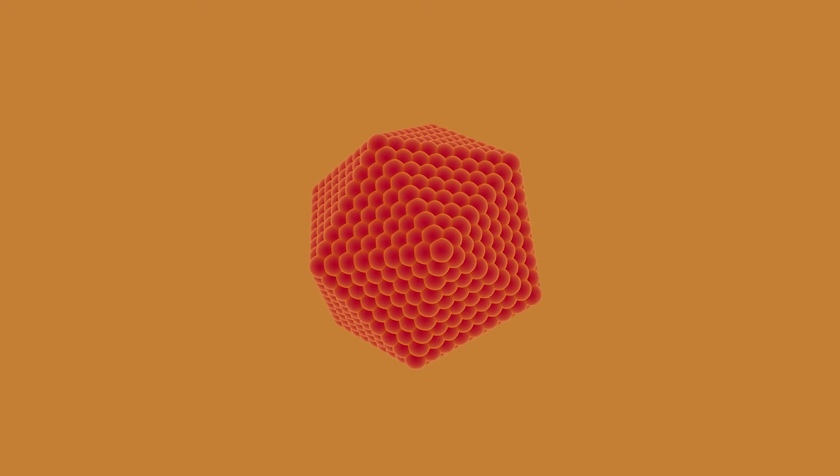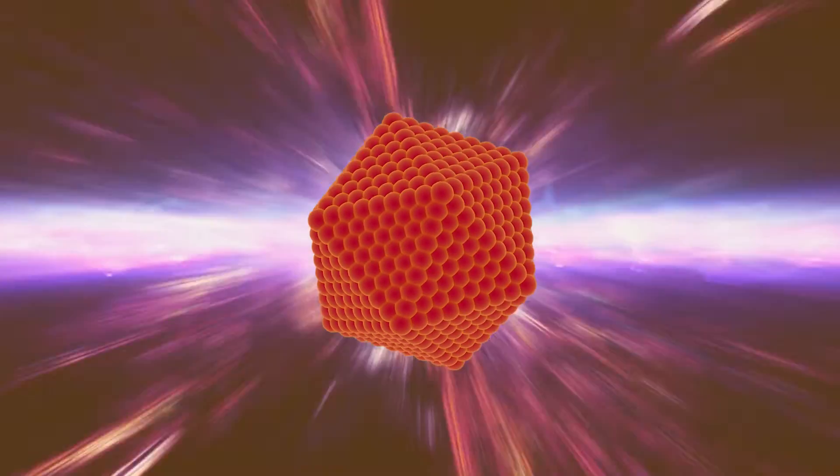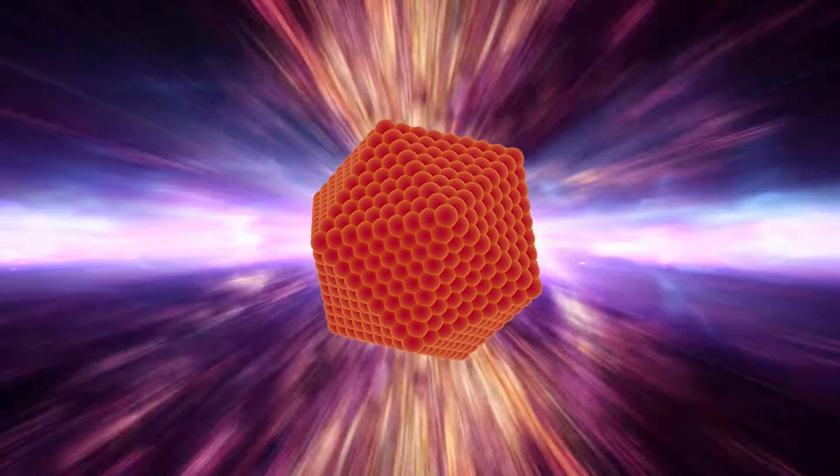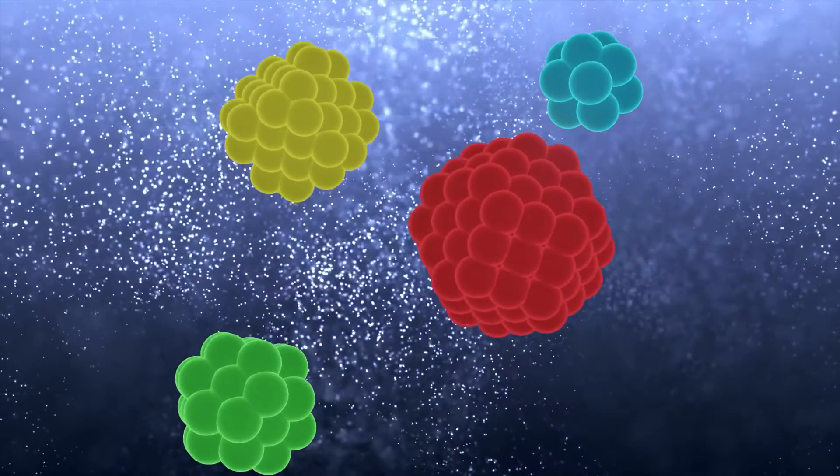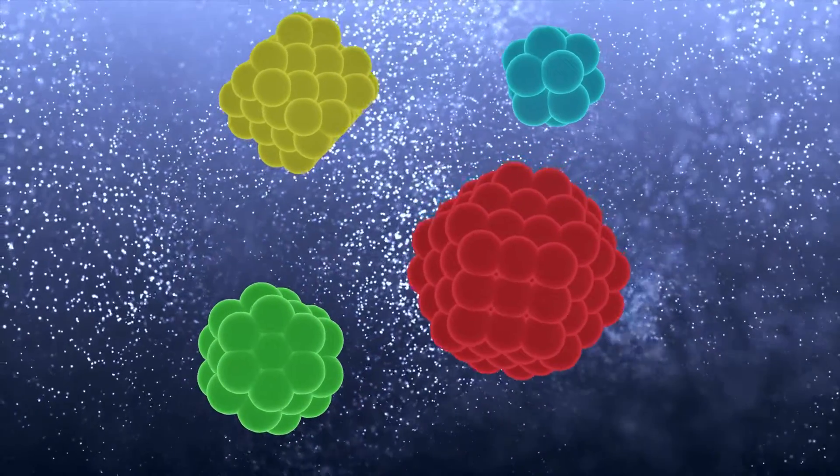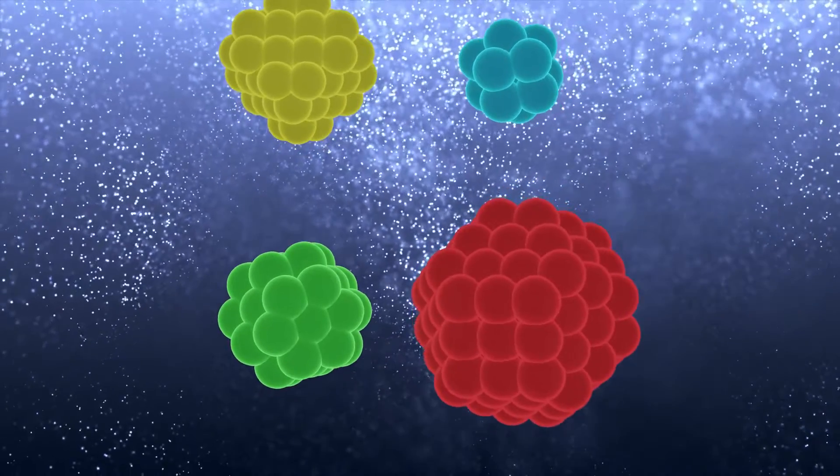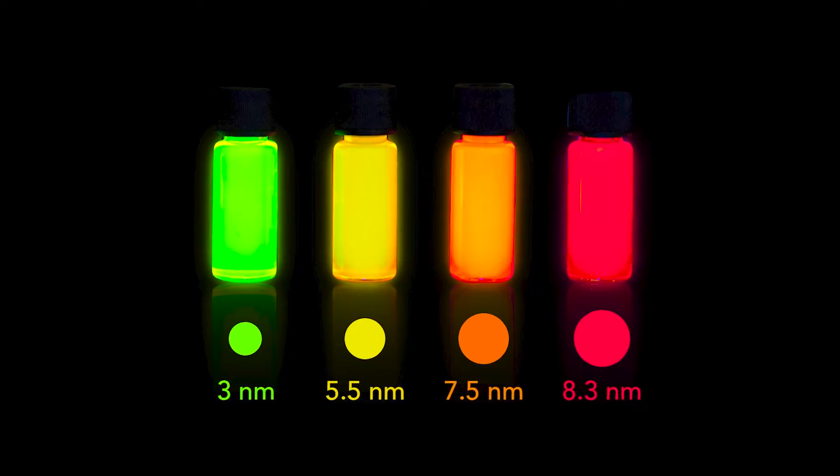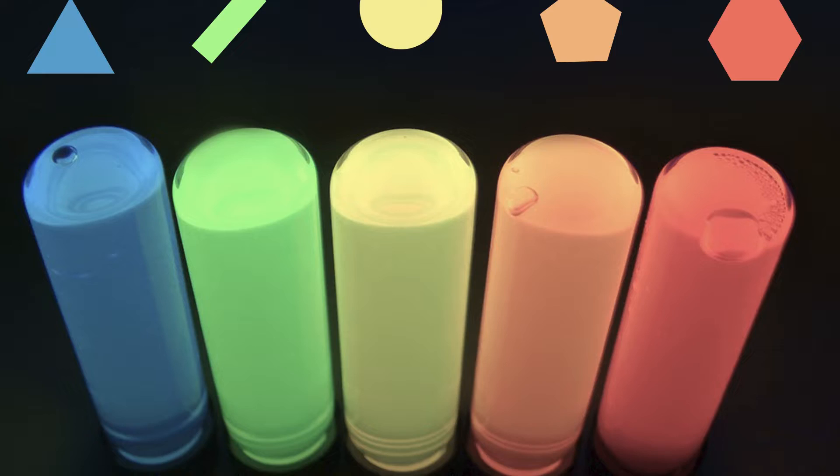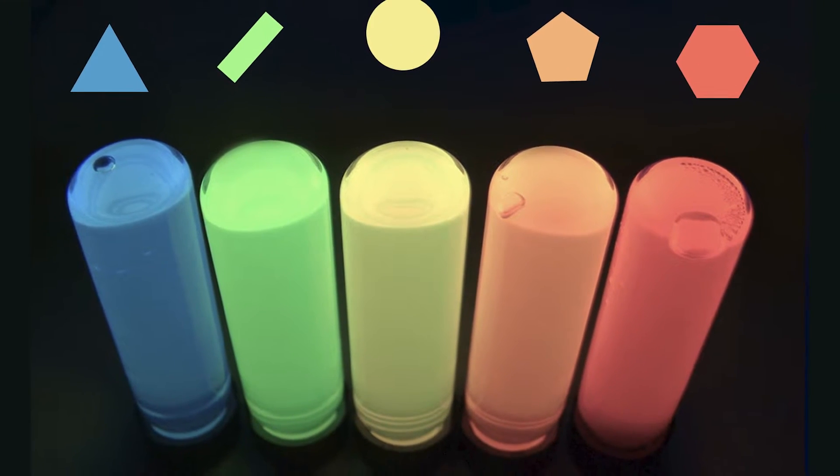So at the nanoscale, it isn't just a material's chemical composition that determines its properties. For example, small changes in the size and shape of a nanomaterial can result in unexpected and unpredictable behaviors compared to larger bulk objects made of the exact same material. The shape and size dependence of these properties is an important characteristic unique to nanomaterials.